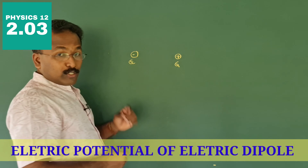An electric dipole consists of equal and opposite charges, plus Q and minus Q, separated by a small distance. The center is at the midpoint, the total length is 2a, and in its vicinity it produces an electric field. We are going to study the electric potential at a random point.